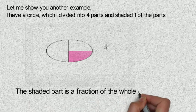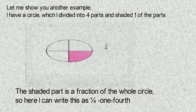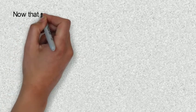The shaded part is a fraction of the whole circle. So here I can write this as one over four, that is one fourth, which means I shaded one part of the whole four equal parts I divided into. So I have one over four which is one fourth.